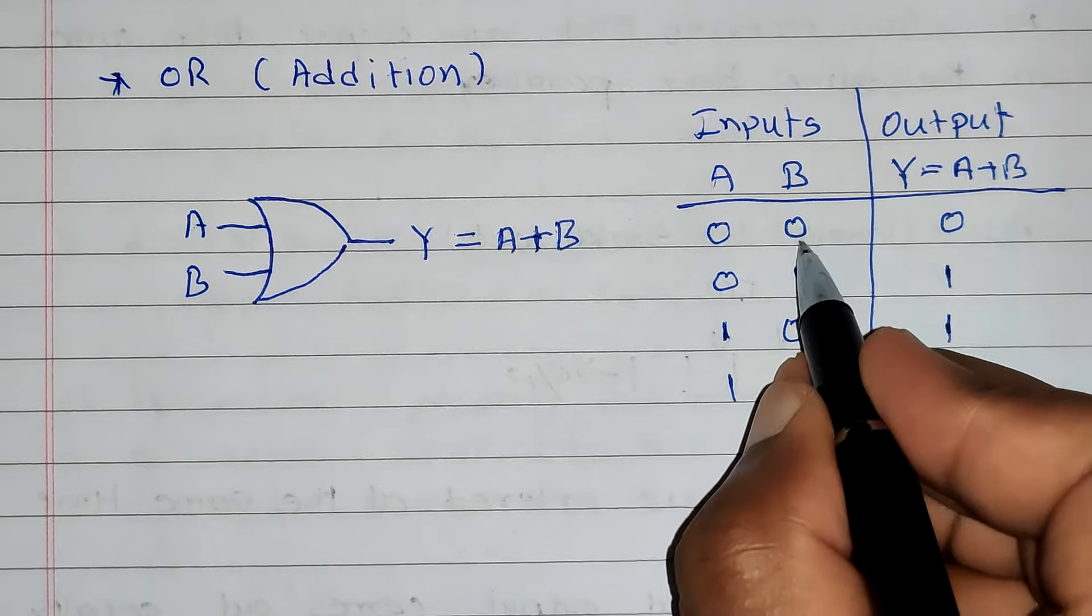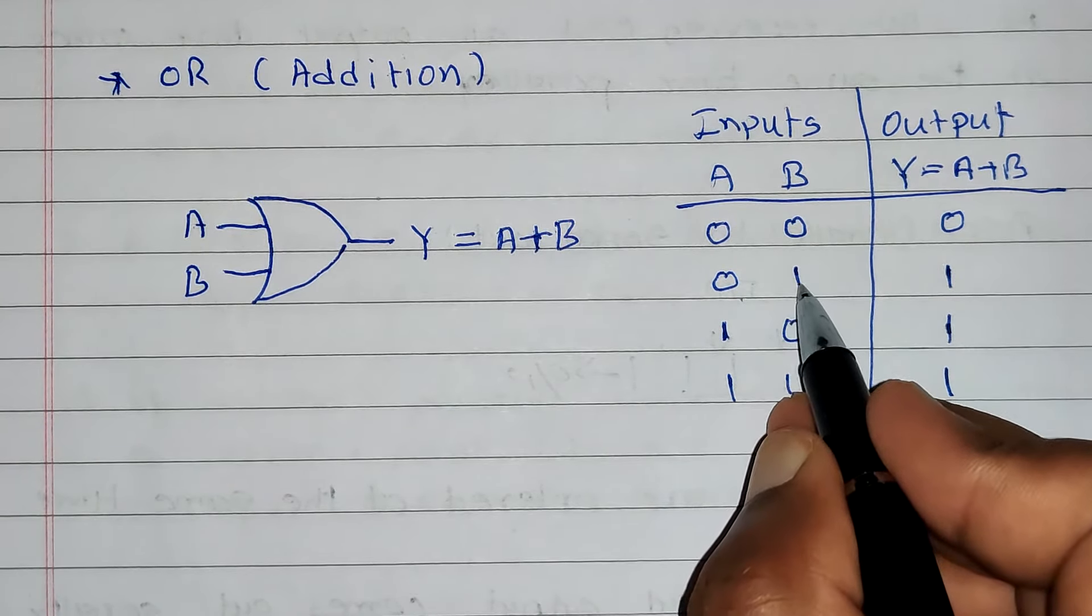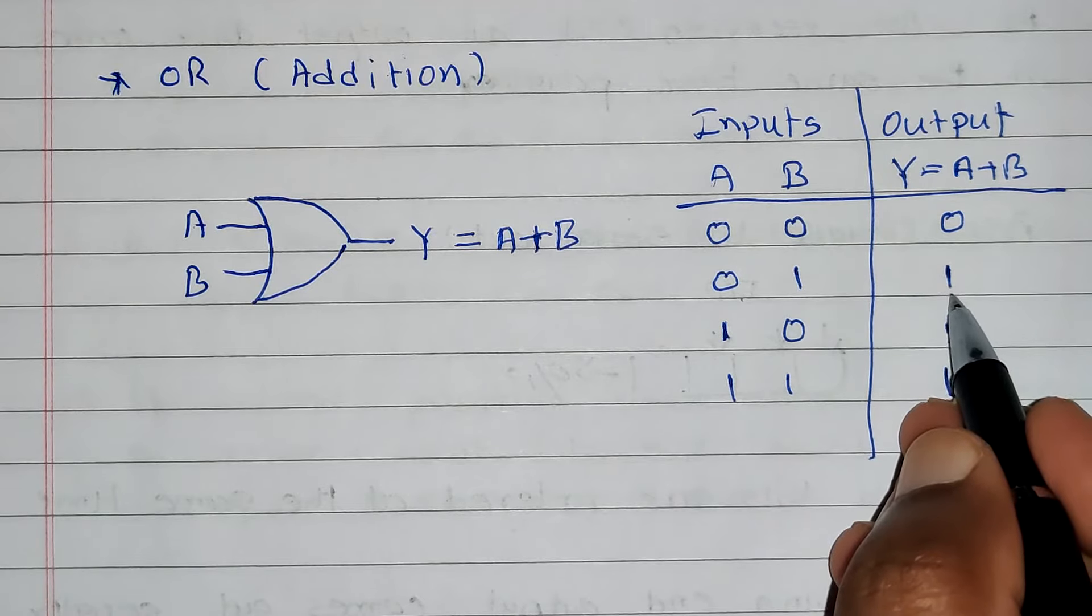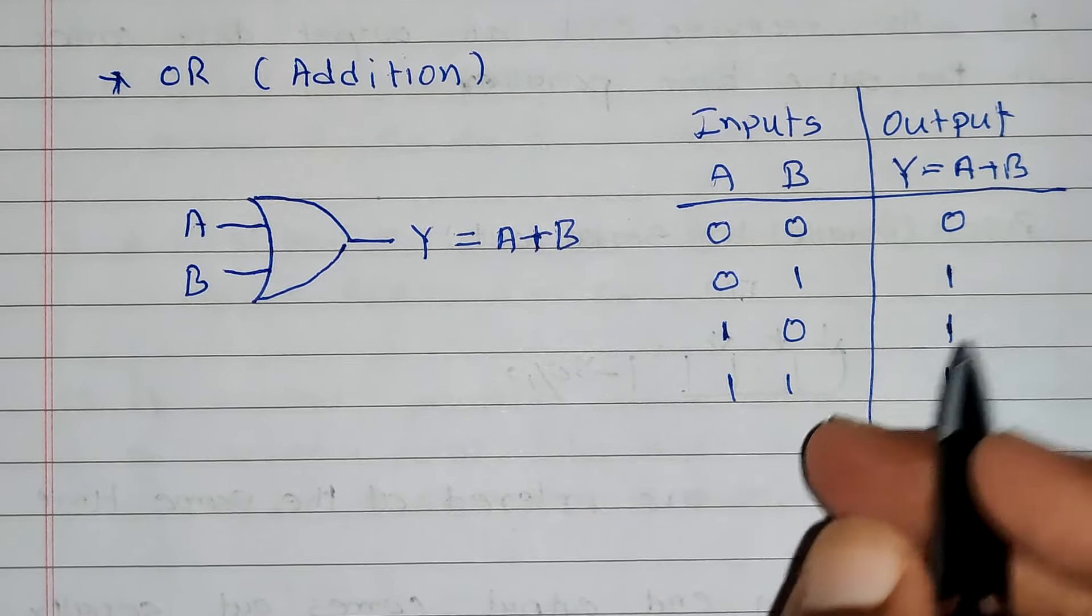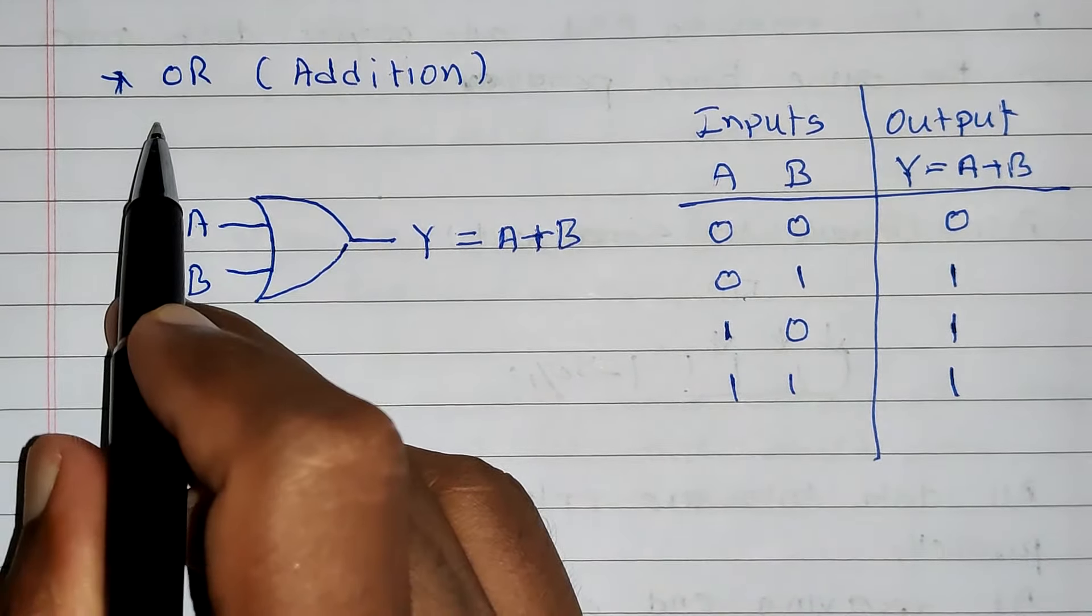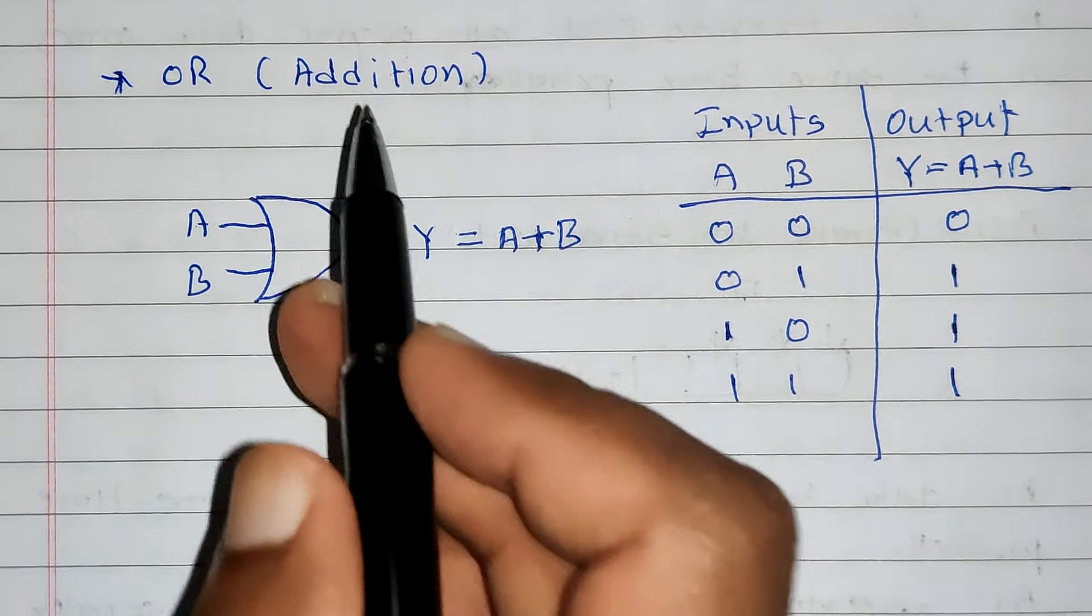So, whenever both inputs are 0, output will become 0. Whenever one of the input is 1, output is going to become 1. And this is the truth table of OR gate. OR gate performs logical addition. Thank you.